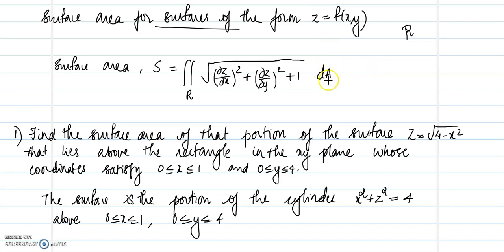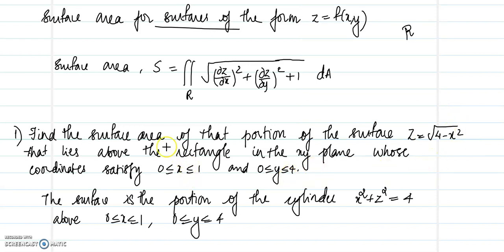Here dA is the element of integration, either dx dy or dy dx. Let us look at a few examples. The first problem is to find the surface area of the portion of the surface z = √(4 − x²) that lies above the rectangle in the xy-plane whose coordinates satisfy 0 ≤ x ≤ 1 and 0 ≤ y ≤ 4.